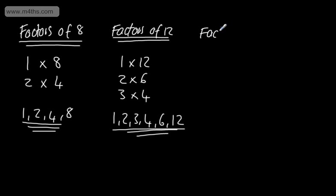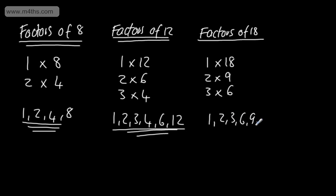If we looked at the factors now of 18. We're going to have the following: 1 times by 18, 2 times by 9, we would have 3 times by 6. I can't multiply 4 by any whole number to get 18. Or if you like, 18 isn't divisible by 4. It's not divisible by 5. So the next number we'd have is 6, so we're back on ourselves. So the factors of 18: 1, 2, 3, 6, 9 and 18.